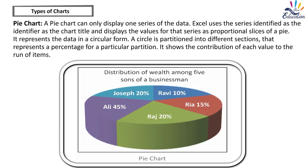Pie chart: A pie chart can only display one series of data. Excel uses the identified series as the chart title and displays the values for that series as proportional slices of a pie. It represents data in a circular form, partitioned into different sections that represent a percentage for a particular partition. It shows the contribution of each value to the total.